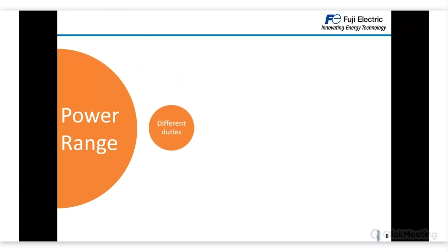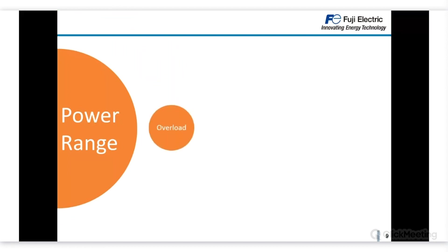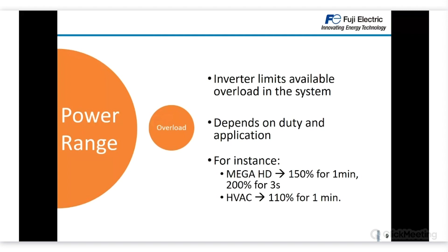Different duty ratings increase the flexibility of inverter selection. They depend basically on required overload, ambient temperature, and carrier frequency, and they modify the motor size you can drive with the inverter. Depending on application characteristics and ambient temperature, you can select different inverter sizes for the same motor. The inverter can also be a limiting factor in available overload — for example, MEGA has 150% for one minute and 200% for three seconds, while HVAC inverters have only 110% for one minute, suited to fan and pump applications.